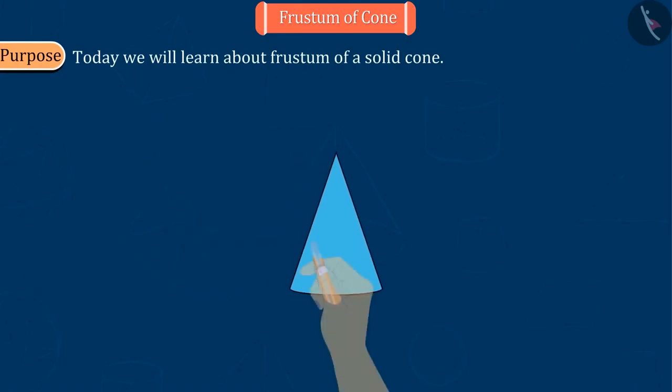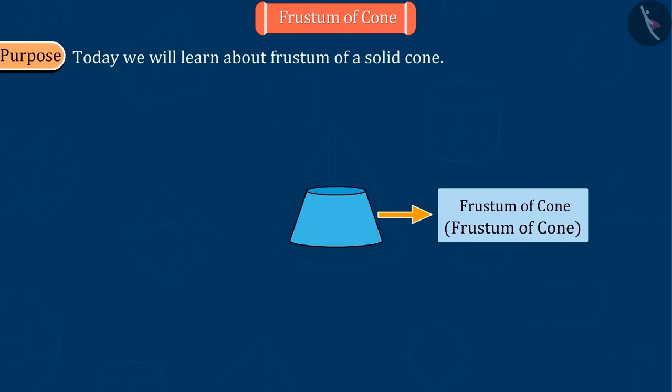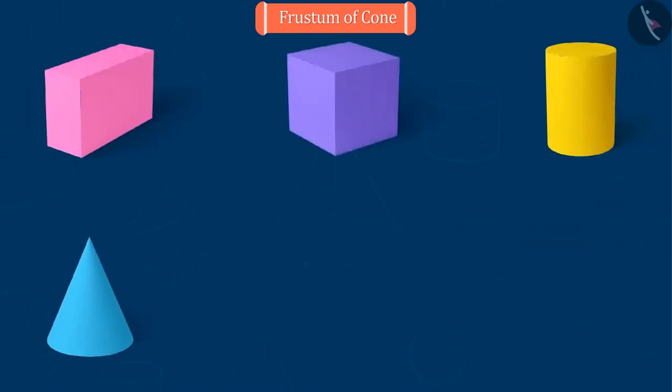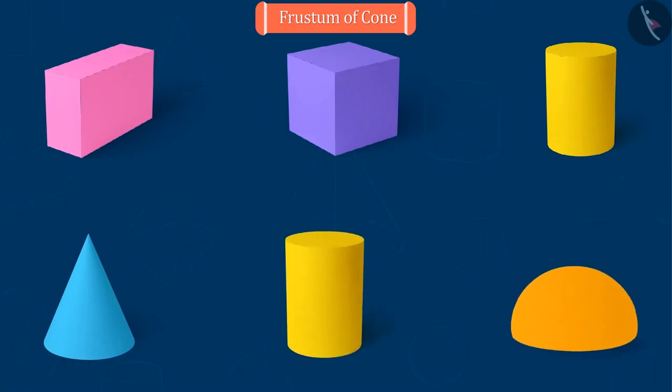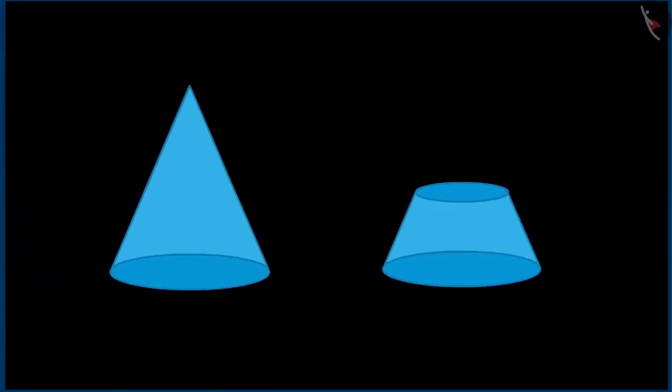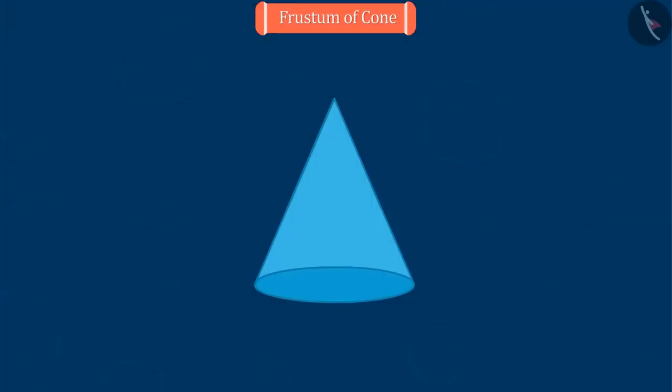Moving forward with this concept, today we will learn about frustum of a solid cone. Dear children, let's see a new shape of this solid family, which looks like a cone but is not a cone by shape. It's a part of cone. We call it frustum of a cone.